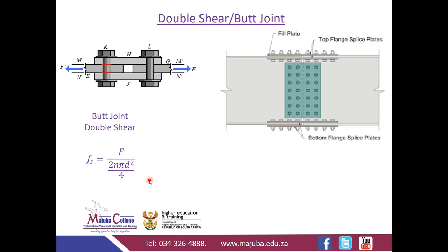Moving on, we have another connection type: the butt joint. Unlike the lap joint, in a butt joint the two members are not directly connected to each other — they are connected by means of two connector plates. Each bolt connects a plate, the member, and the other plate.